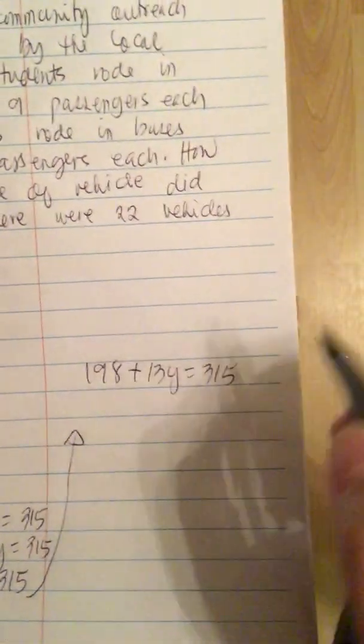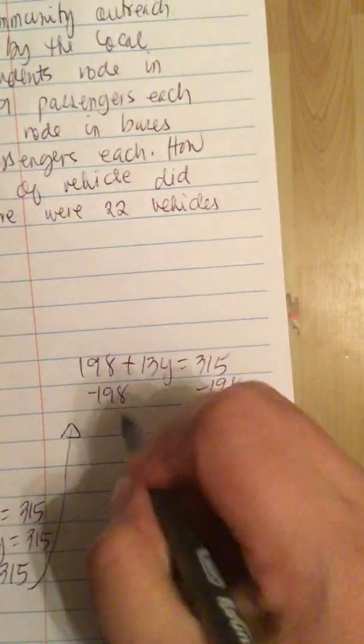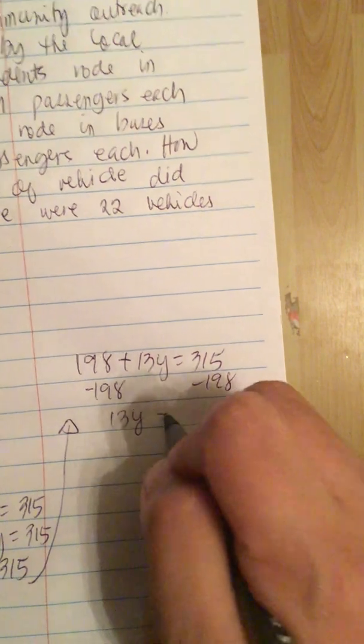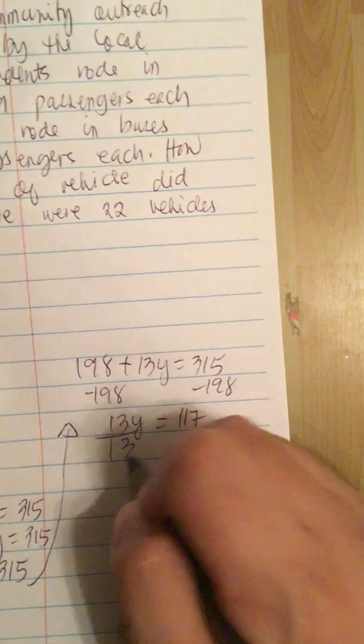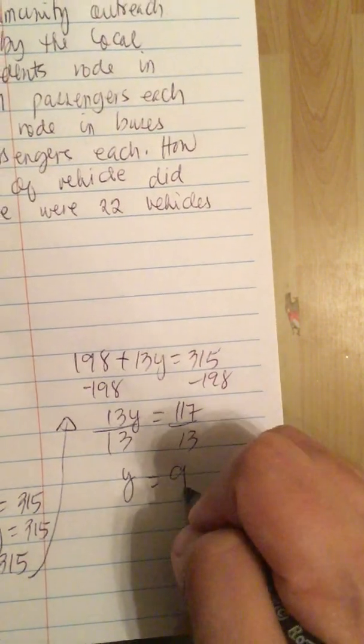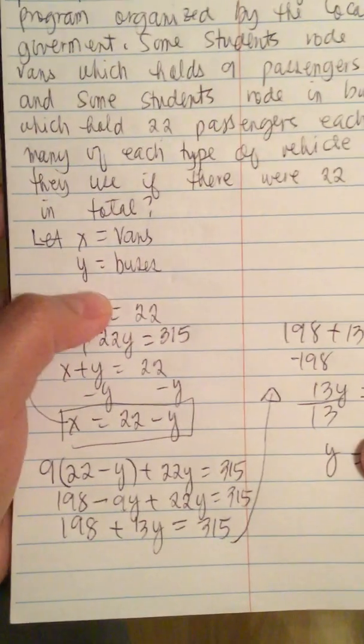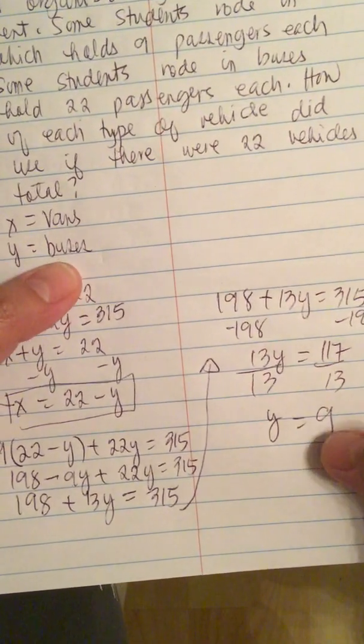So we subtract 198 from both sides. So we have 13y is equal to 117. So we divide by 13 and y is equal to 9. So y is equal to 9. That means there were 9 buses.